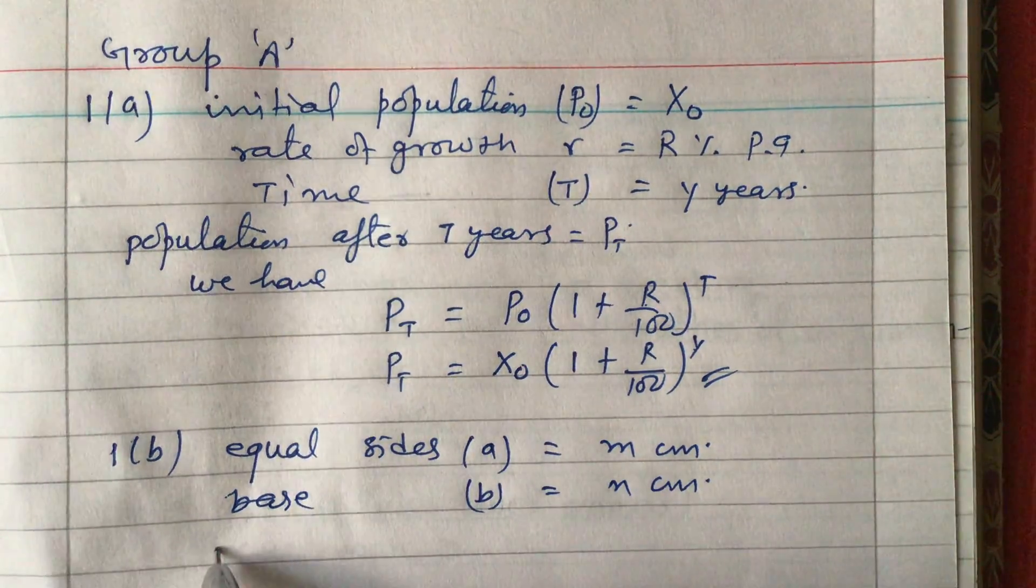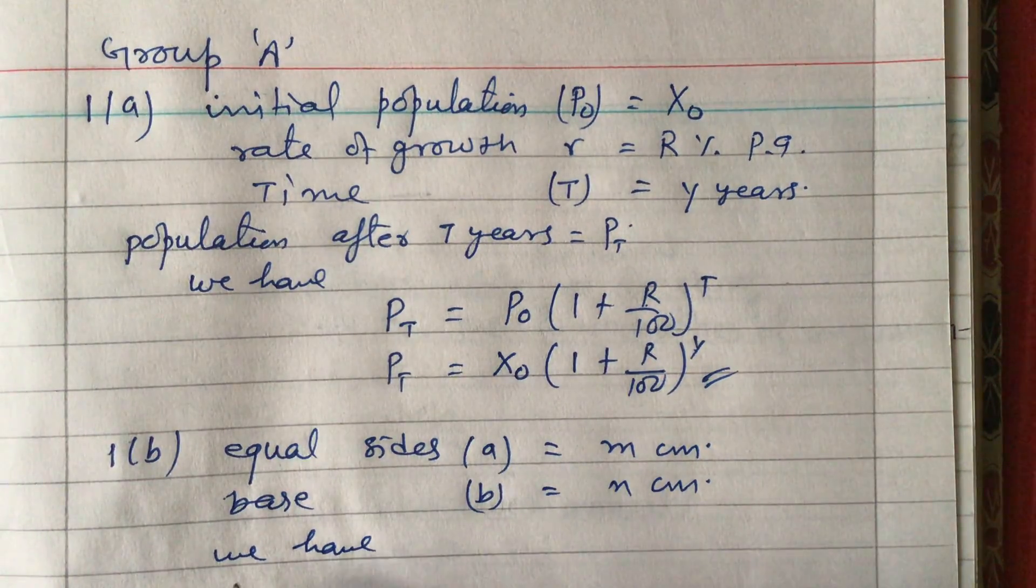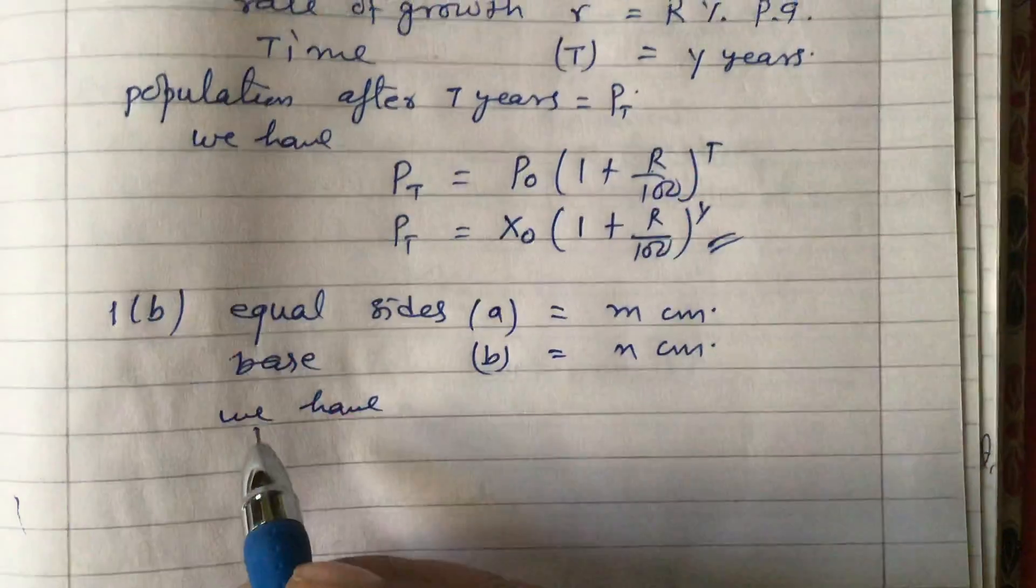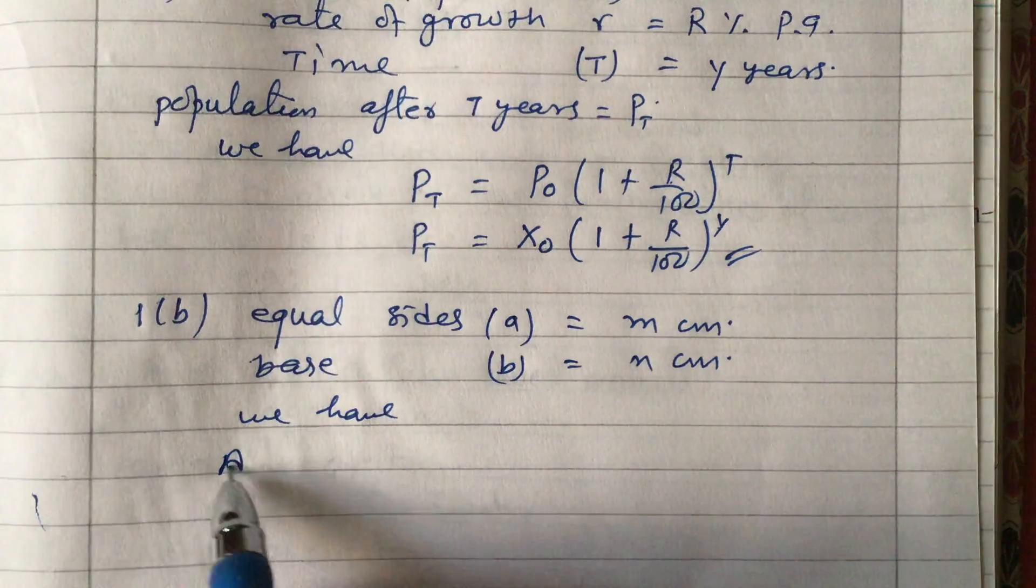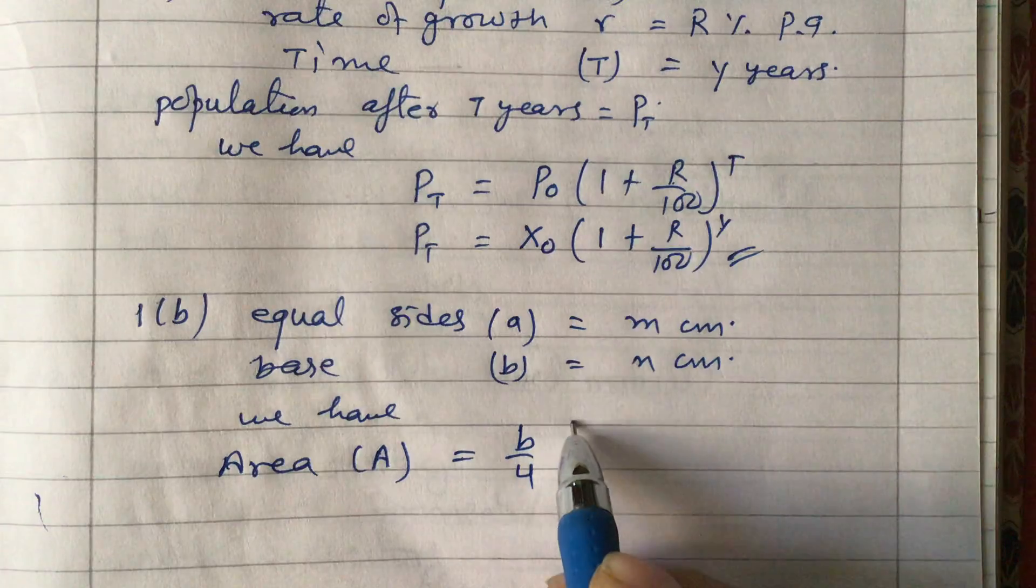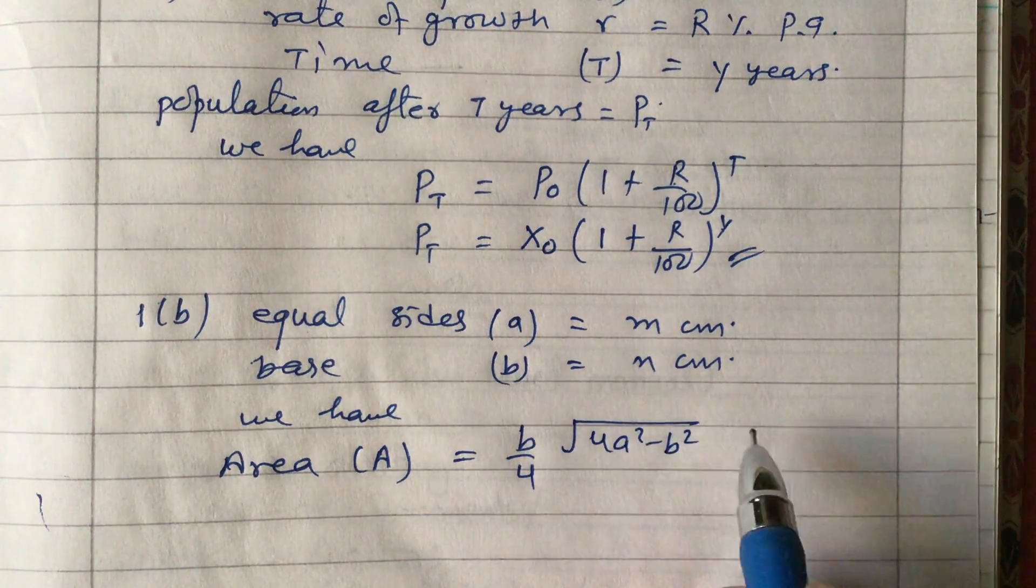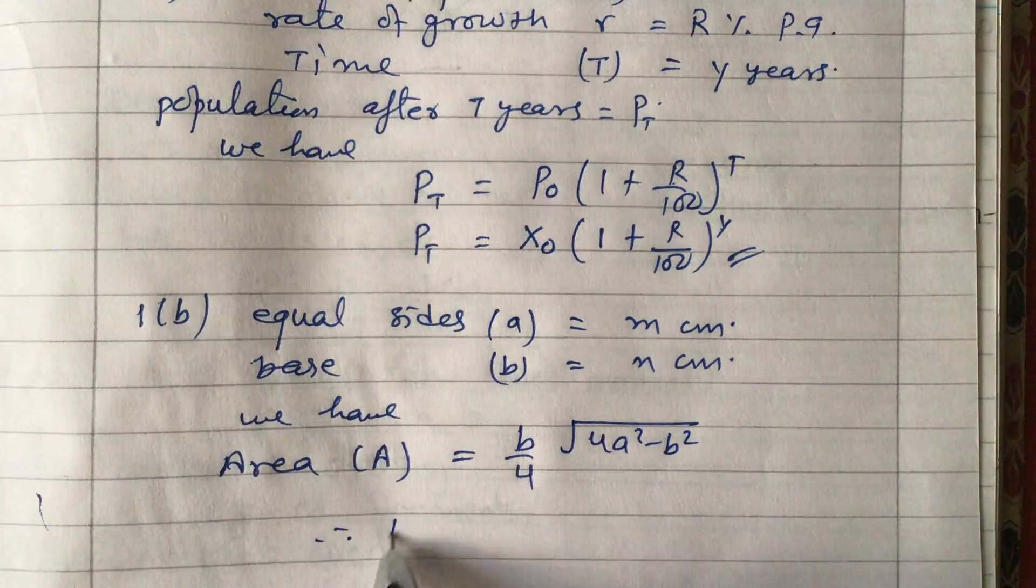Now we use the formula for the area of an isosceles triangle: A = (b/4)√(4a² - b²). This is our formula.